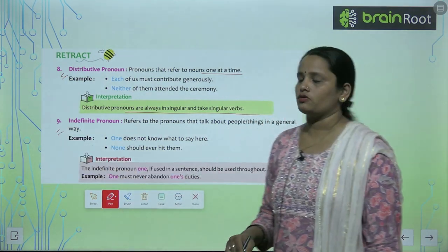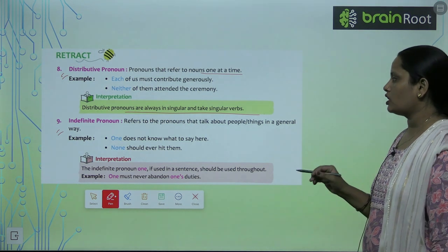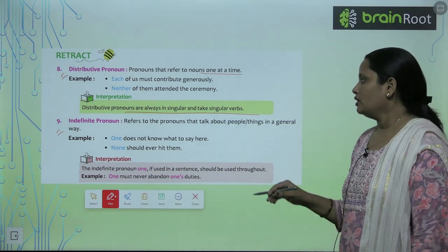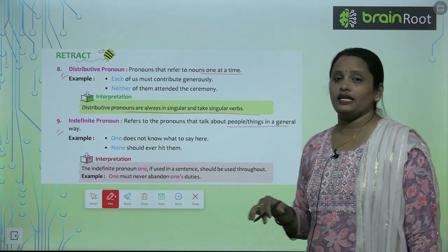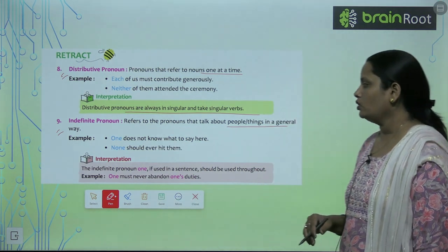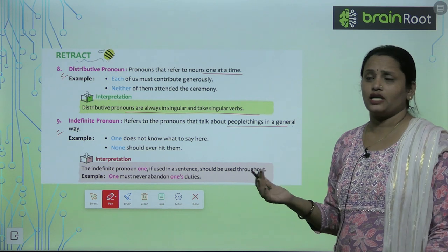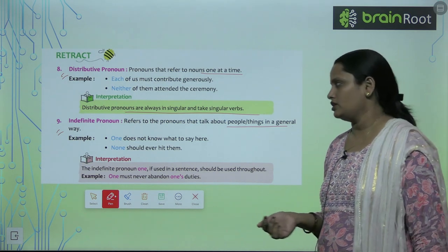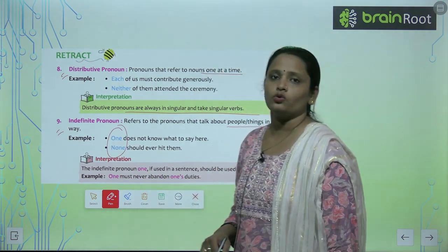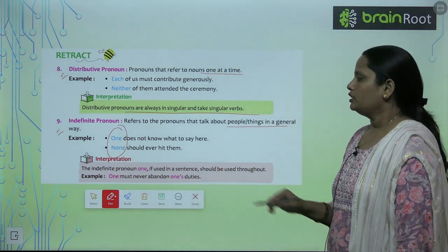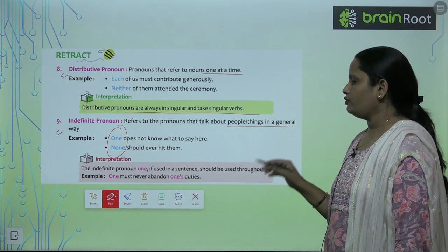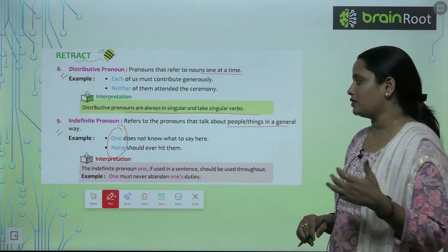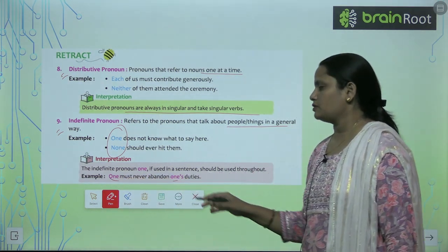Next is indefinite pronouns. These refer to pronouns that talk about people or things in a general way. For example: 'One does not know what to say here.' 'None should ever hit him.' The words one, none, nobody, etc. can refer to any person. If 'one' is used in a sentence, it should be used throughout: 'One must never abandon one's duty.'